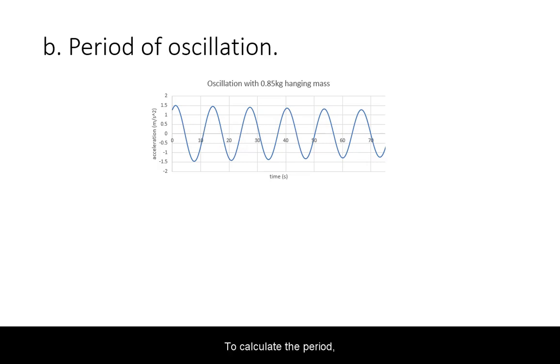To calculate the period, I select a peak from the beginning and the end of the graph. Declare the formula to calculate period, which is the change in time divided by the number of oscillations completed in between, and plug in.